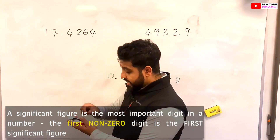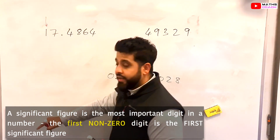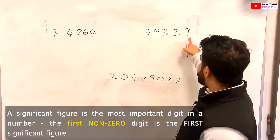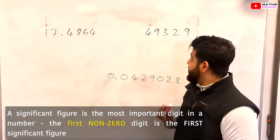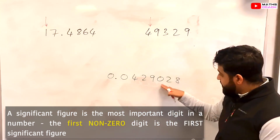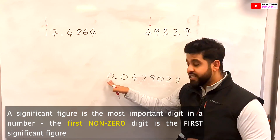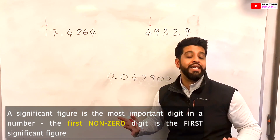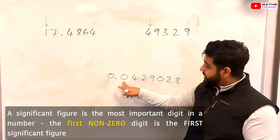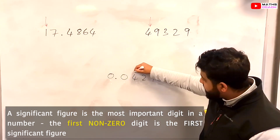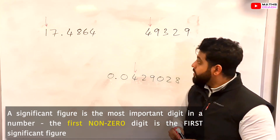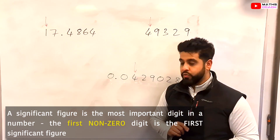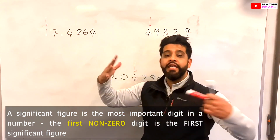Here the first significant figure is the 1 — it's a non-zero number. So 1 is the first significant figure, and for 49329 the first significant figure is the 4. Now look at 0.0429028: the first number is 0, and 0 if it comes first cannot be a significant figure. Continuing, the zeros are not the first significant figure — 4 here is the first significant figure. So: 1 for the first number, 4 for the second, and 4 for the third. After that, any number can be a significant figure.